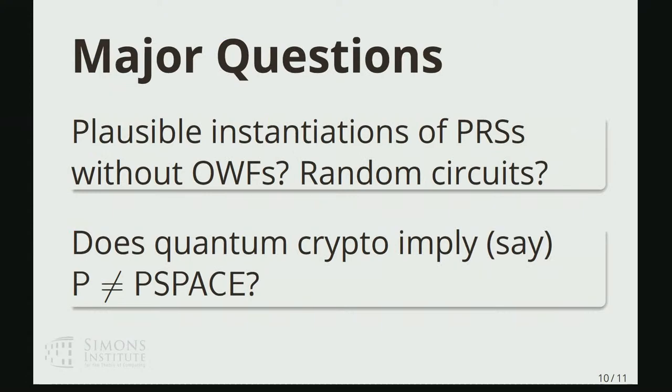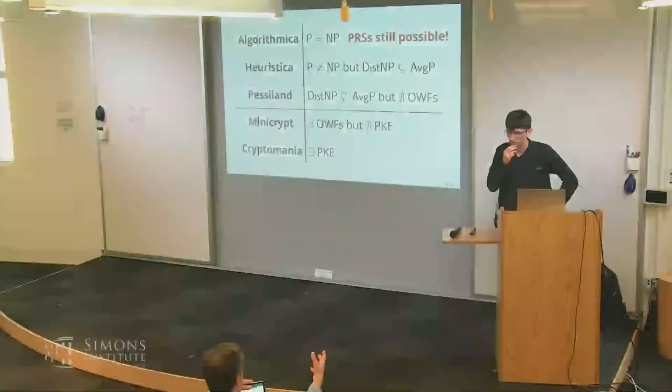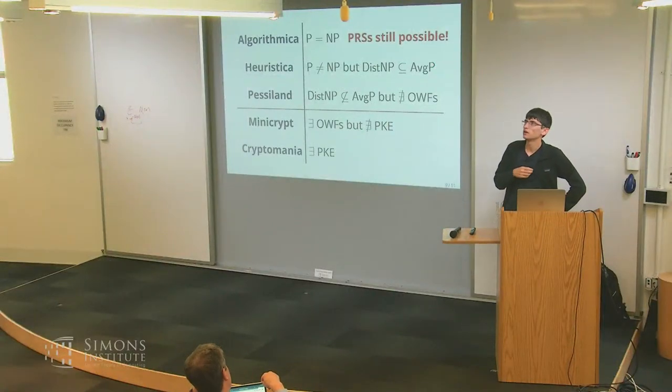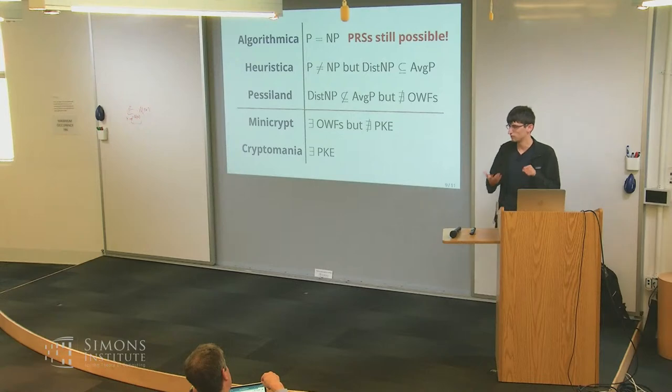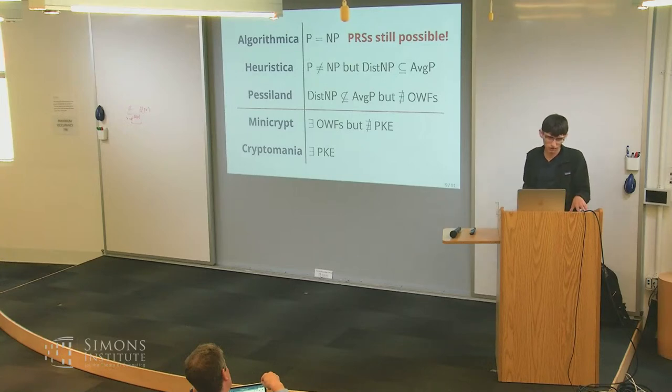You said you had a concrete assumption? Yeah, there's like a concrete assumption you can make of a cryptographic hash function like SHA-3, where we show that this property implies the existence of secure pseudorandom states, but this property is also independent of the P versus NP problem.